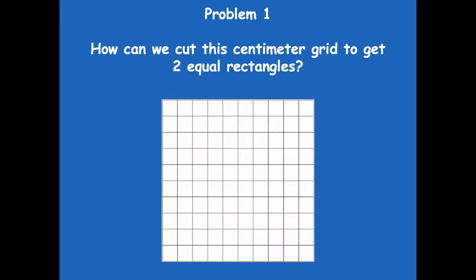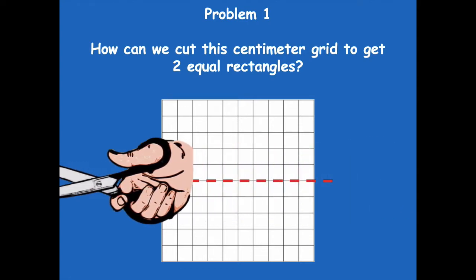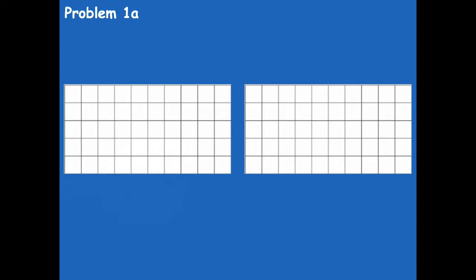Here's our rectangle. How can we cut this centimeter grid to get two equal rectangles? We can cut it right here horizontally, or you can cut it vertically — either way is fine as long as it's the same on both sides. Grab your scissors and cut across just here. You should be left with two rectangles. Go ahead and pause the video, do that, and then click play when you're ready for the next step.